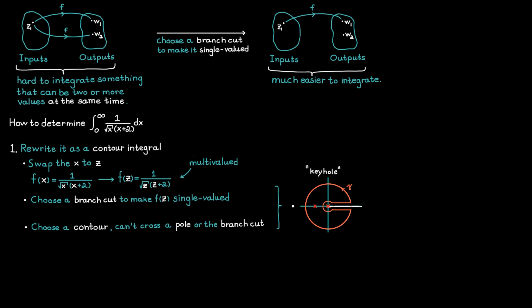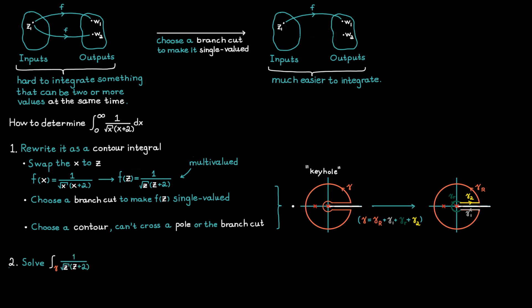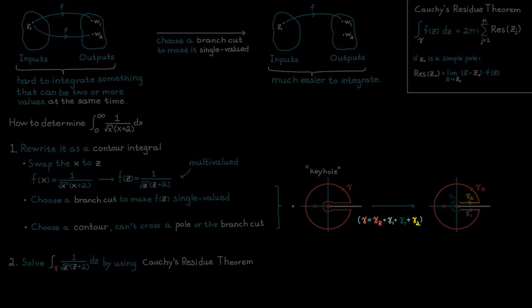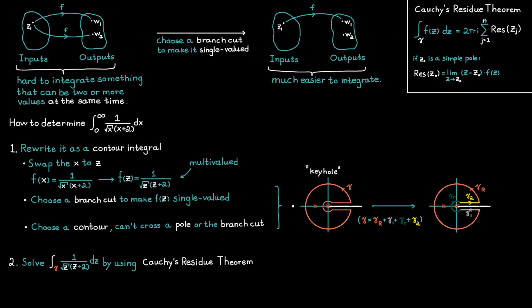The next thing we are going to do is break up our big contour gamma into four parts. The first one, gamma R, is simply going to be the bigger circle. Then we are going to have gamma 1, which is the horizontal line that goes from the big circle to the smaller circle. Then we have gamma r for our smaller circle inside. And lastly, we have gamma 2, which is going to be the horizontal line that goes from the smaller circle to the bigger circle. Everything that's left for us to do now is to solve our new contour integral using Cauchy's residue theorem. We can use that this integral along gamma is going to be equal to the sum of the integrals along the parts, and by doing that we will be able to determine the integral we started with.